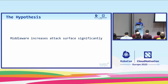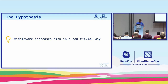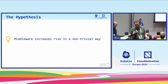Now let's start with the hypothesis. Middleware increases attack surface significantly — but then you might ask, what does significantly mean? How about this: middleware increases risk in a non-trivial way. I think this is a good one because ultimately, as cluster operators, we're interested to know what's the risk in the cluster, and 'non-trivial' has leeway for interpretation.